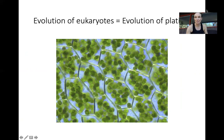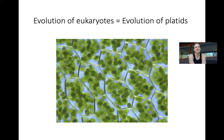The evolution of eukaryotes really mirrors that of the evolution of plastids. In this picture we see chloroplasts, but there are all sorts of different kinds of plastids; the ones you're most familiar with are probably chloroplasts and mitochondria. That was critical for the development of life on earth, and most of what we talk about in the next few days is going to be about that.